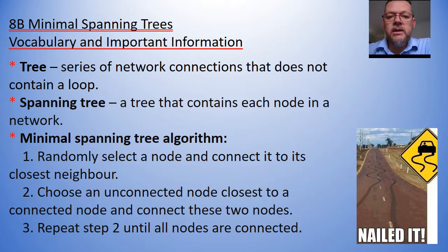A tree is just needing to connect up each node in a network. It does not need to be a path. A minimal spanning tree algorithm is the most efficient way then to connect each of these nodes to its neighbor. So we'll look at this algorithm here. So what we need to do is, first of all, just randomly select a node and connect it to its closest neighbor. Then you're going to choose an unconnected node closest to the connected node and connect those two nodes. And then we're just going to keep repeating until all of the nodes are connected.